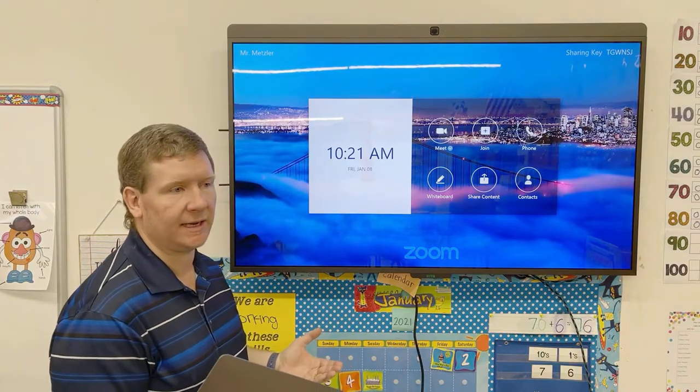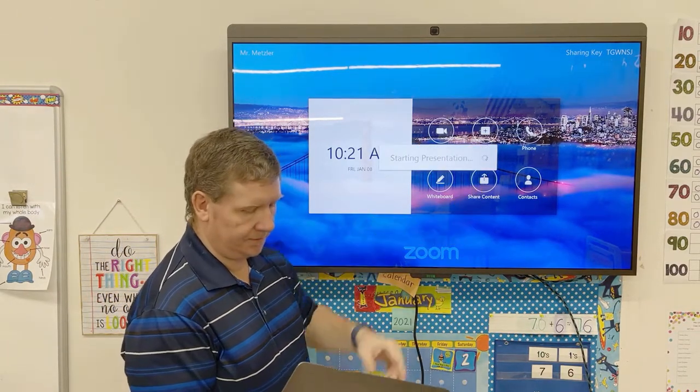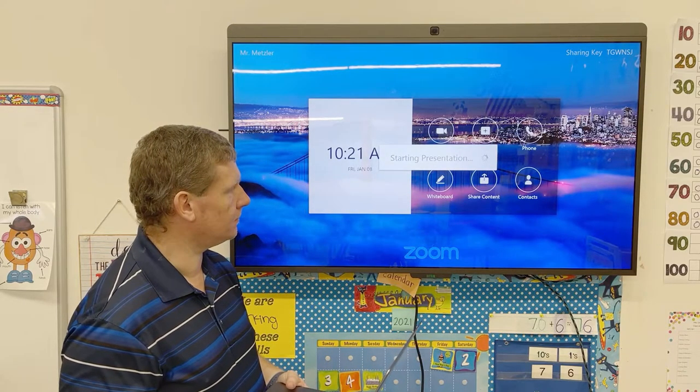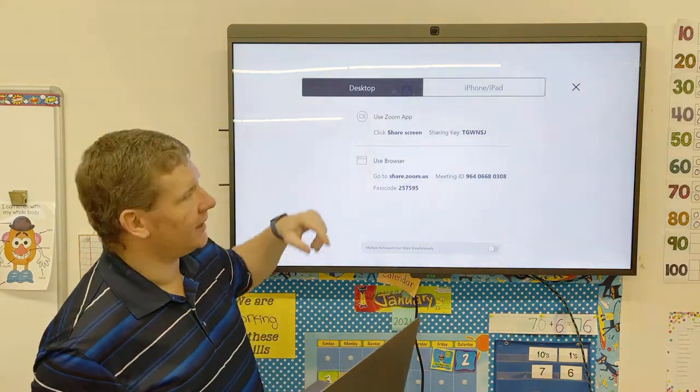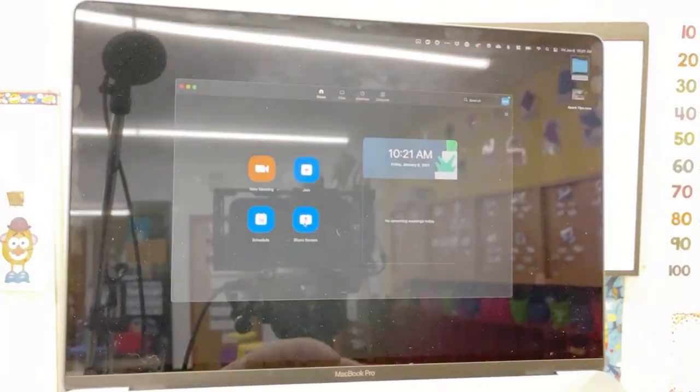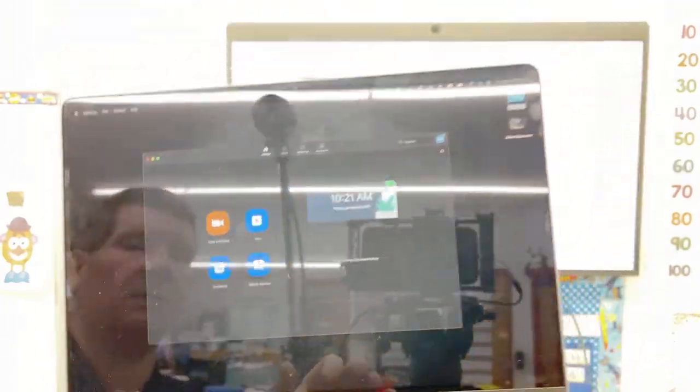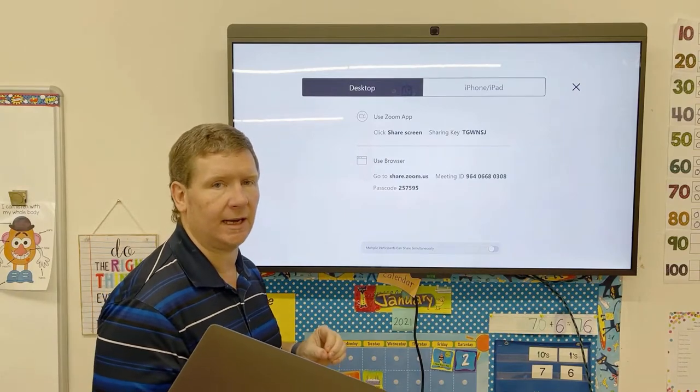So now I'm going to show how to connect to it using your desktop method. You're going to click on share content and leave it on desktop. On your MacBook, you want to open up your Zoom app. This bottom right icon says share screen. When you click on that share screen icon, what it's going to do, sometimes it will share instantly.